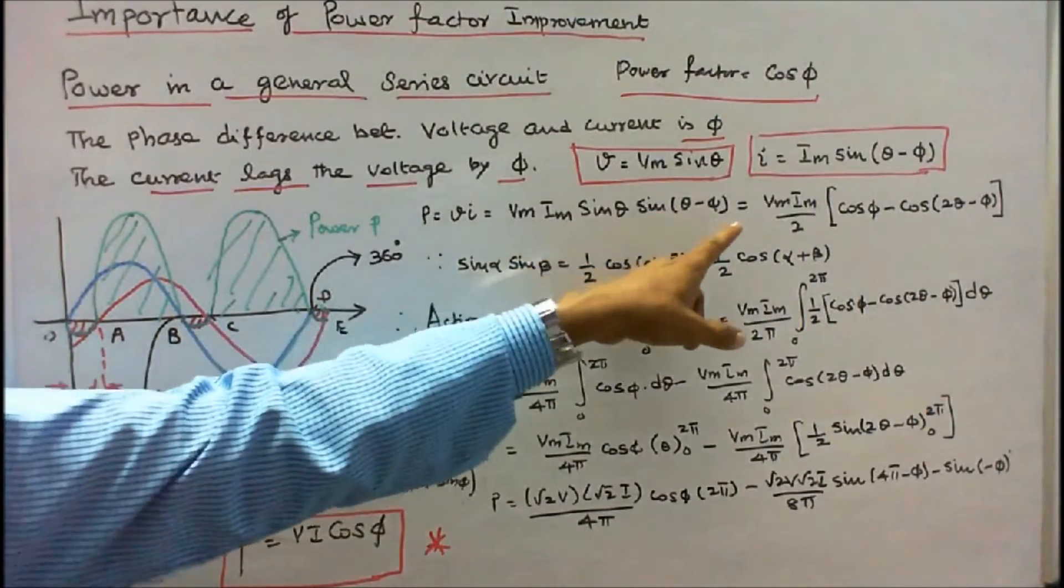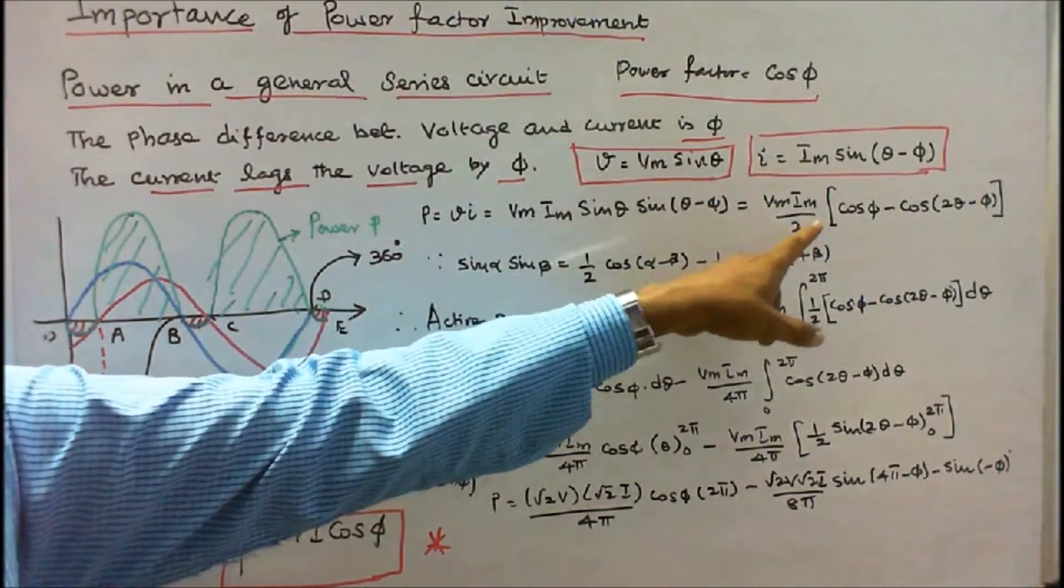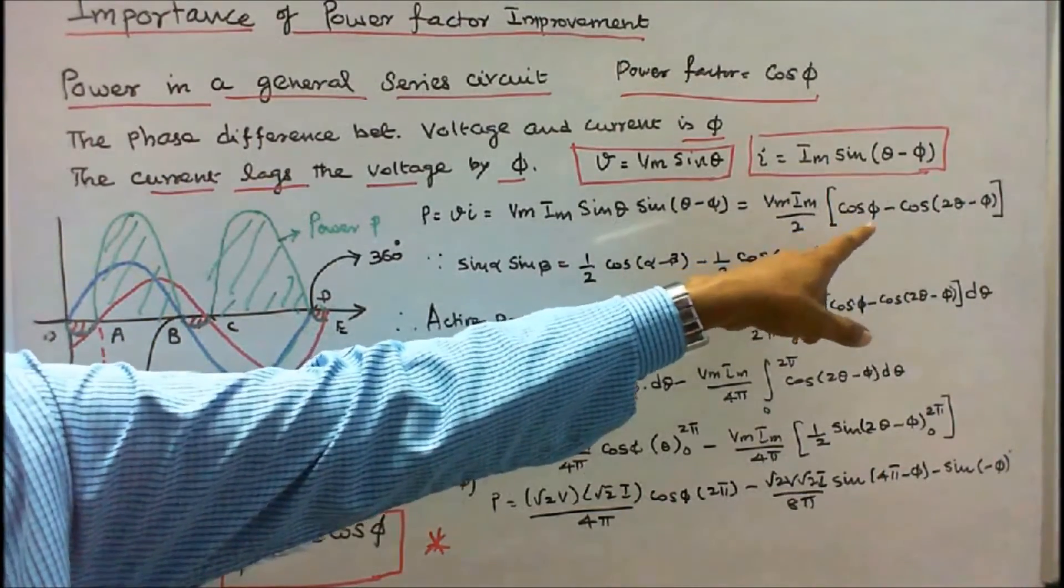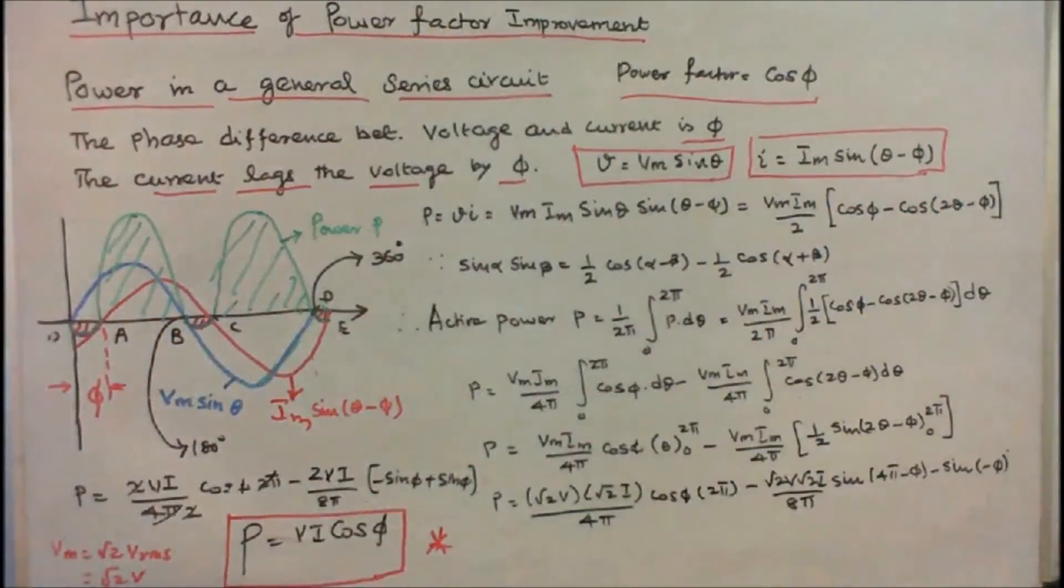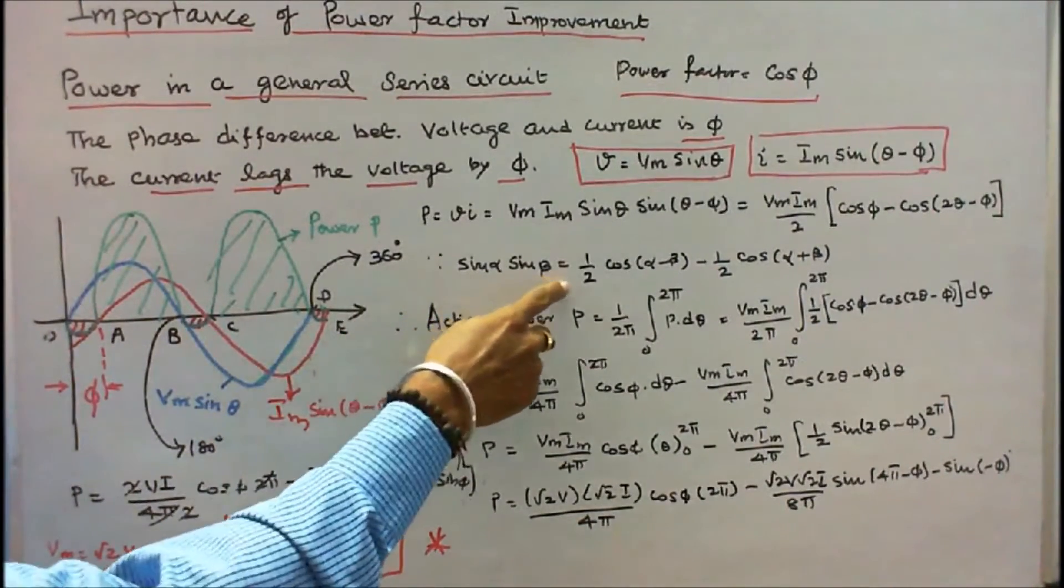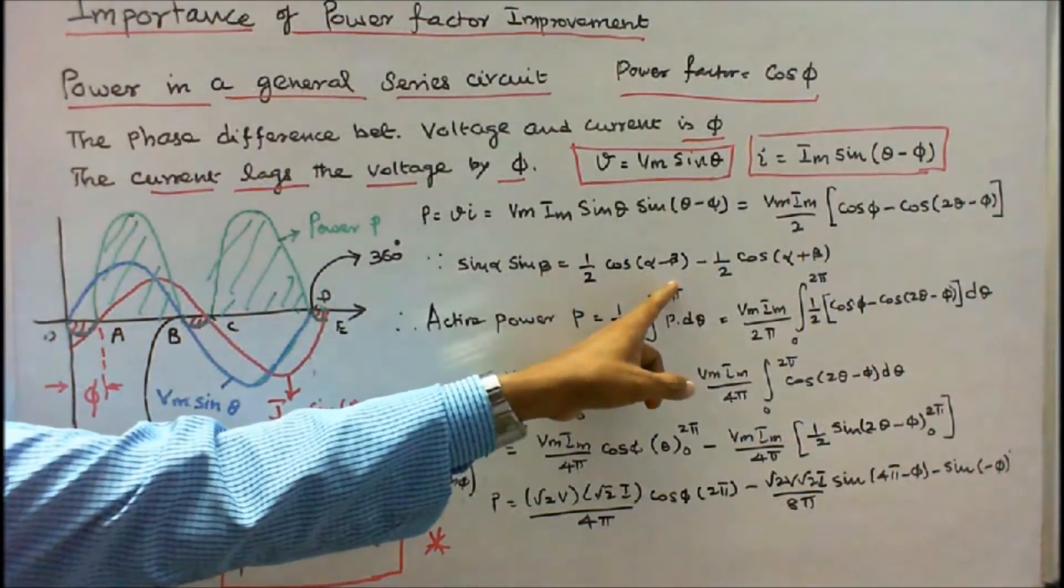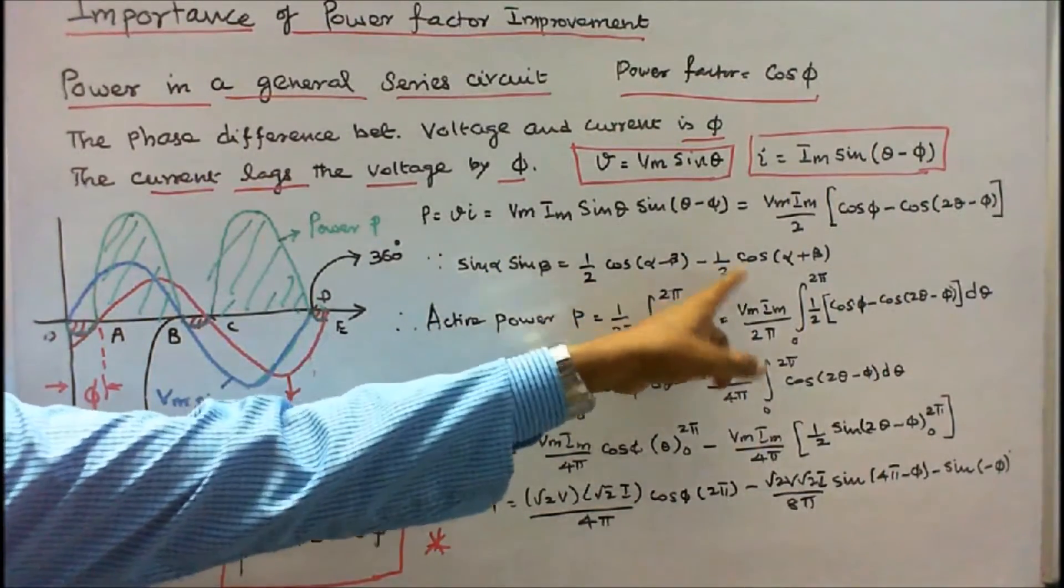That is equal to Vm times Im times cos φ minus cos(2θ - φ). We know that sin α times sin β is equal to (1/2)cos(α - β) minus (1/2)cos(α + β).